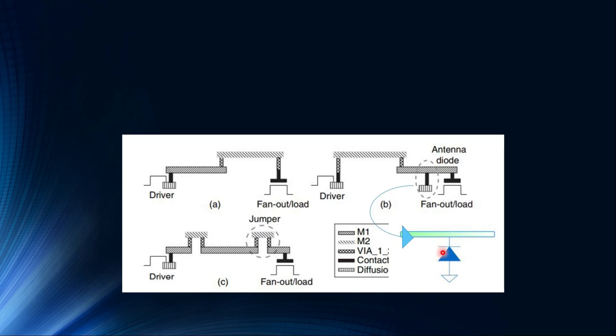And the third technique is using metal jumpers or metal hopping, right? So in this technique what we do is we cut this metal, the lower metal over here, as near to the gate as possible, and we route it in the top metal layer. Again, this may not be available always. It needs extra vias and extra metal usage.